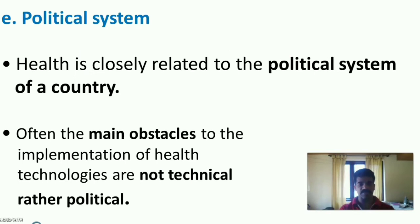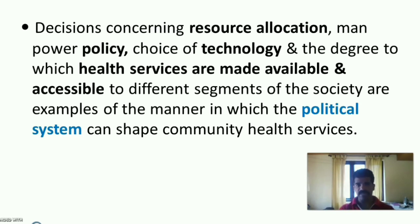Health is closely related to the political system of a country. Often the main obstacles to the implementation of health technologies are not technical but political. Decisions concerning resource allocation, manpower policy, choice of technology, and the degree to which health services are made available and accessible to different segments of society are examples of how the political system shapes community health services.